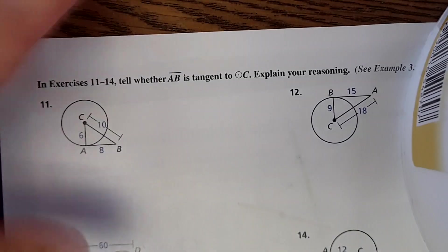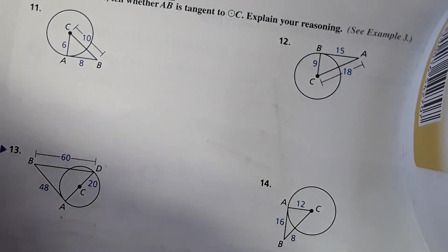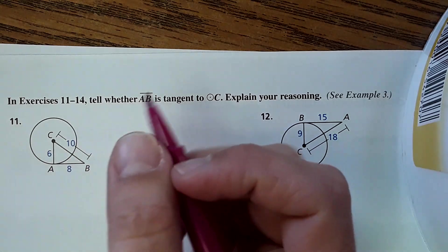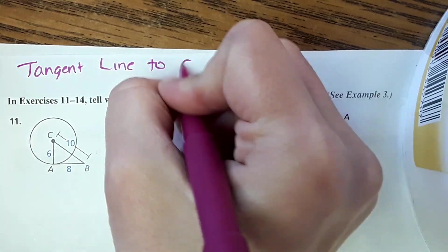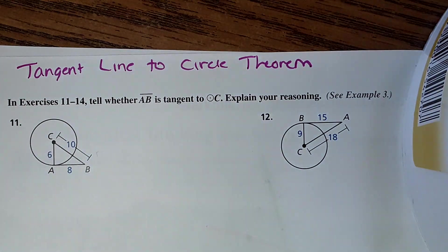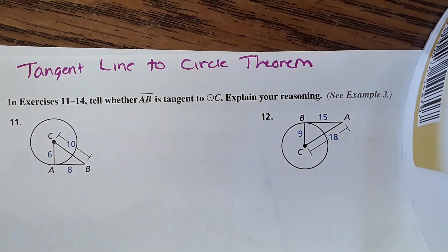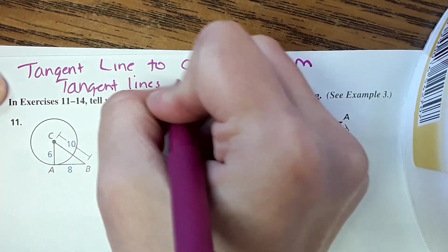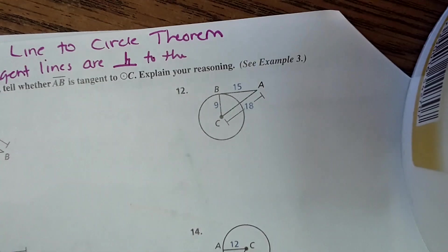Now we're going to do some solving stuff. There is a theorem. We're going to keep it really simple. There's actually two theorems with this lesson. The first one, I'm just going to write it at the top. It's called tangent line to circle theorem. What the tangent line to circle theorem says is that tangent line is perpendicular to the radius.